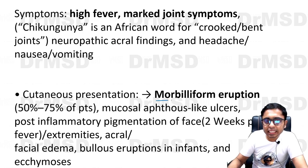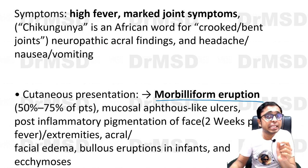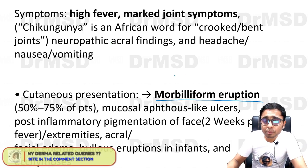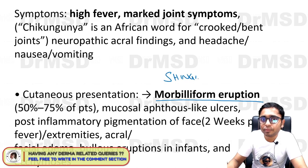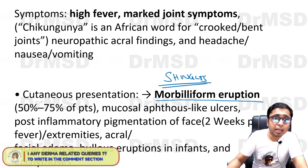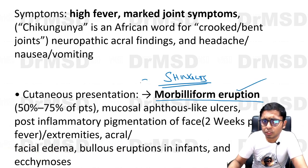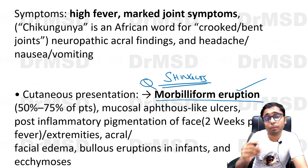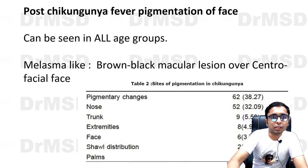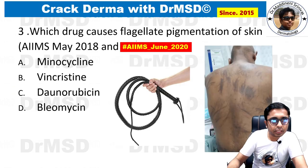From a previous MCQ, morbilliform eruption is seen in all of the following except shingles. Dengue, rubella, measles, and even chikungunya can produce morbilliform eruption. This is a possible potential future MCQ, so please make a note.